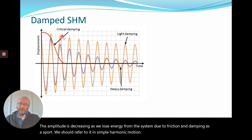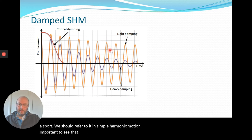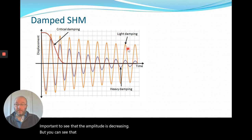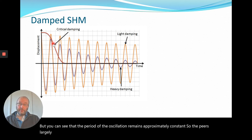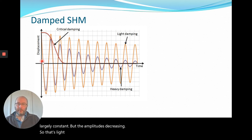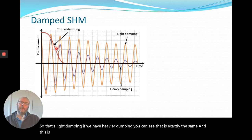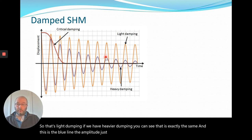Importantly, the amplitude is decreasing but the period of the oscillation remains approximately constant. The period is largely constant but the amplitude is decreasing — that's light damping. With heavier damping, shown by the blue line, the amplitude just decreases more quickly — that's the only difference.